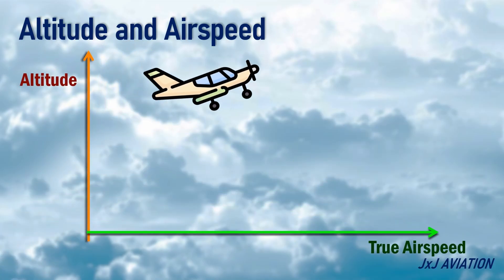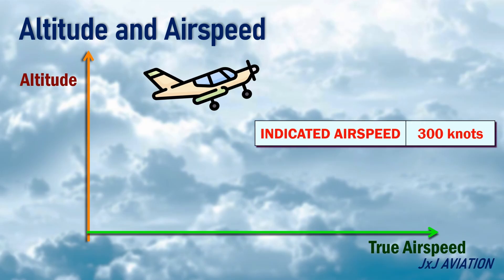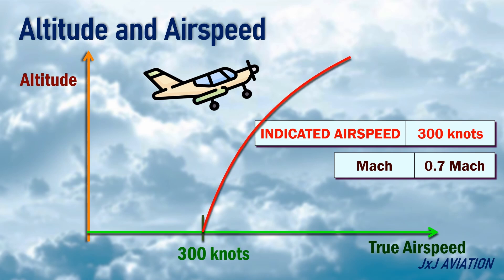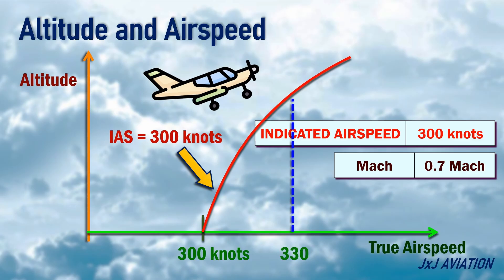Let's consider an aircraft climbing at a fixed indicated airspeed of 300 knots and limited to a maximum speed of Mach 0.7. At the lowest altitude, the indicated airspeed and the true airspeed are the same. As the altitude increases, the indicated airspeed of 300 knots will change, as shown here. This means that at a particular altitude, although the indicated airspeed is 300 knots, the actual speed of the aircraft will be more than 300 knots.